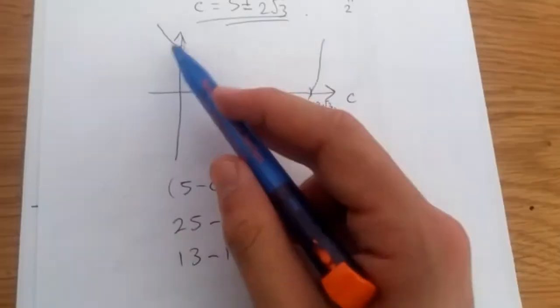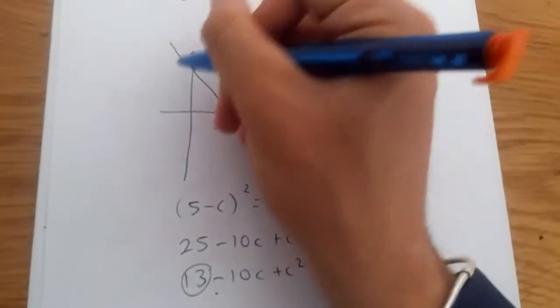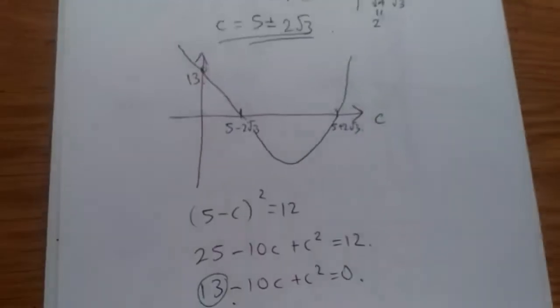That's it. So, when x is equal to 0, we should get an intercept of 13. And this is our y-intercept.